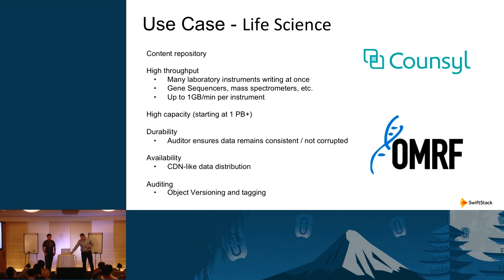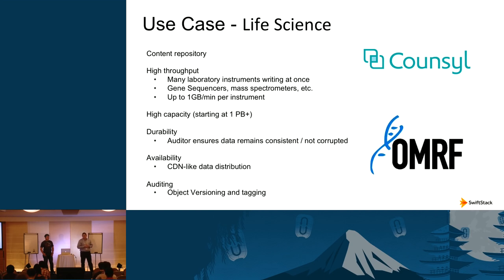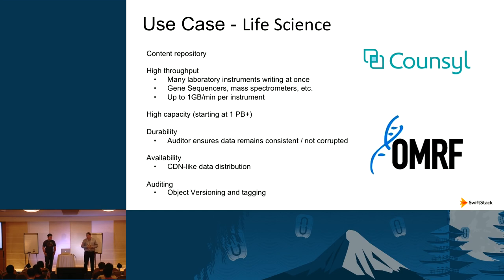Life sciences is an area where Swift is gaining significant traction as a content repository. Laboratory instruments such as gene sequencers, mass spectrometers, and various sensors generate data that's uploaded into Swift, creating large concurrency and throughput requirements. The ability to spread data across multiple regions satisfies durability requirements, and the life sciences community can read data in, process it, and publish results all within one centralized repository.